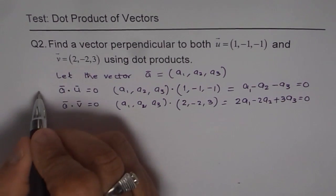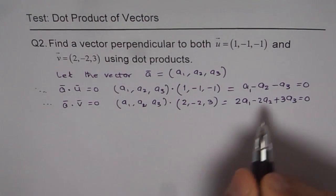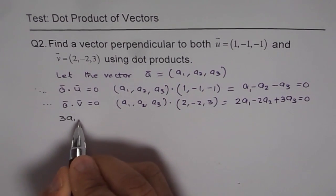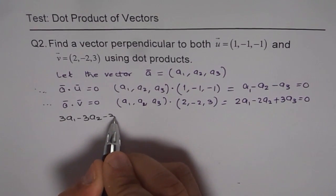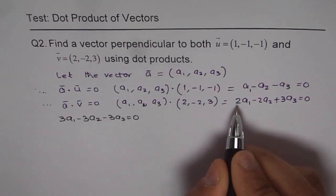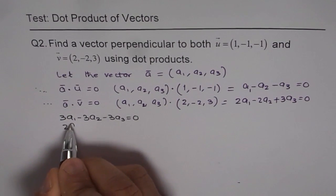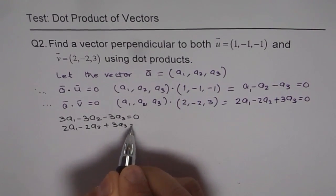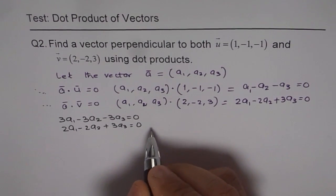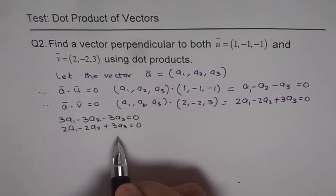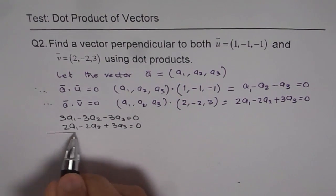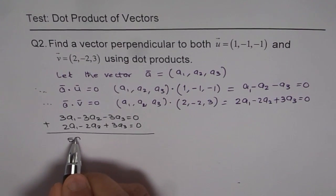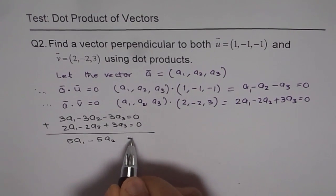So the first equation, multiplied by three, gives us 3a1 minus 3a2 minus 3a3 equals zero. And the second equation is a1 minus 2a2 plus 3a3 equals zero. Now I will eliminate a3 by adding them up. If you add them up, you get rid of a3 and you get 5a1 minus 5a2 equals zero.